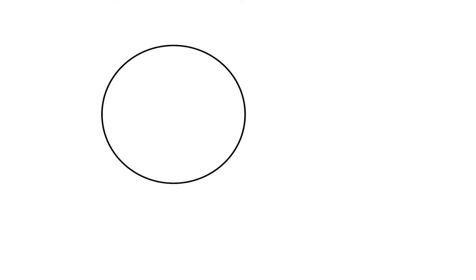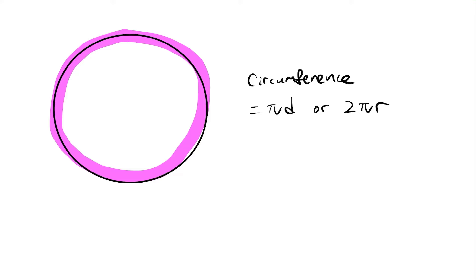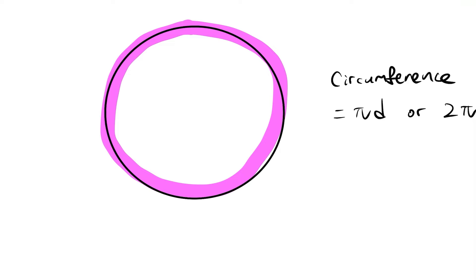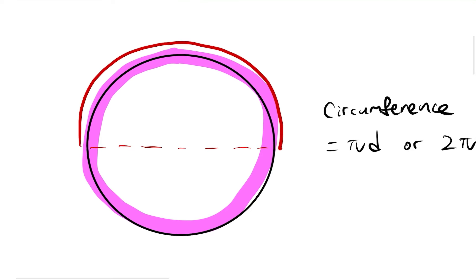So now I'm going to talk a little bit about arc length. We know that the circumference is equal to pi times diameter, or 2 times pi times the radius. Now what I want to do is split this circle into two even parts — two semicircles — and find the length of the top part, which is what we call an arc length. It's basically just like a circumference, but not the full circle — just part of it.